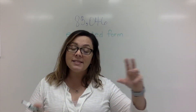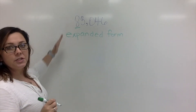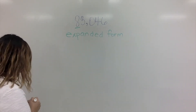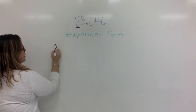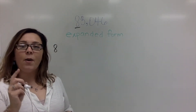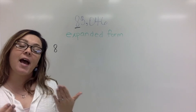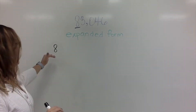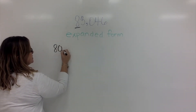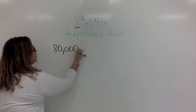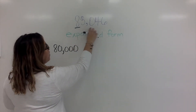Remember, often we start on the right side in math, but when we're doing expanded form we actually start on the left. I like to start with my largest place and work down from there. My first digit is an 8. I know that the 8 is in the ten-thousands place, so that means my digit has to have a value in the ten-thousands. Since it is an 8, the value is 80,000. That's how I'm going to write that digit — simply write the value.